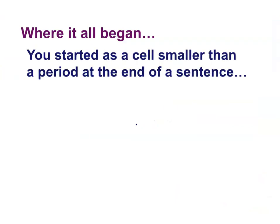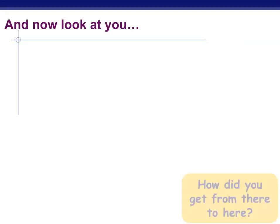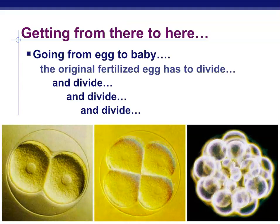We all started out as a cell smaller than the period at the end of a sentence. Cell division explains how you got from a single cell to where you are now and how you maintain all of those cells. We all started out as a zygote — that's going to be a fertilized egg cell. That cell divided into two, then into two again — four, then eight, and so on and so forth.